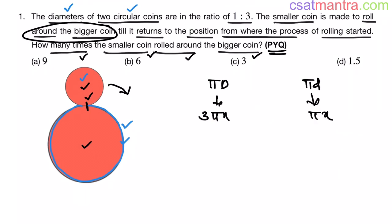Now in 1 turn this smaller circle will travel its perimeter distance. So pi x distance in 1 turn, total distance 3 pi x in how many turns? That is 3 pi x by pi x. This is 3. So our answer is C.